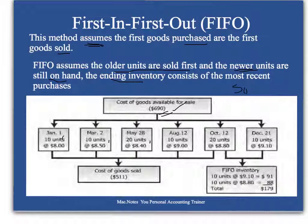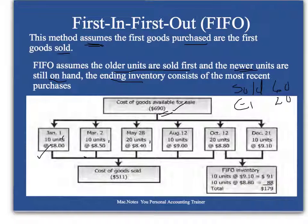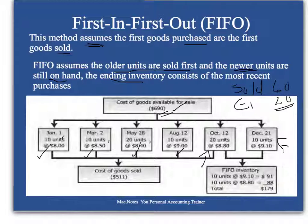We sold 60 units and we have 20 in ending inventory. Under FIFO, the first ones — January, March, May, August, and 10 of the October units — were sold. The 20 units in ending inventory are the 10 purchased in December and 10 of the 20 purchased in October.